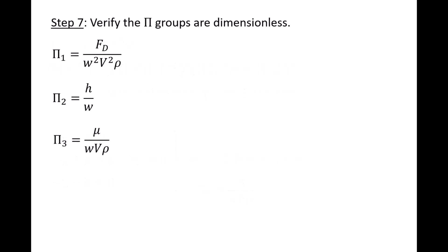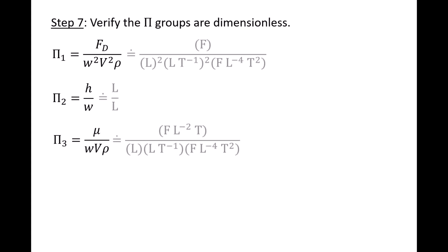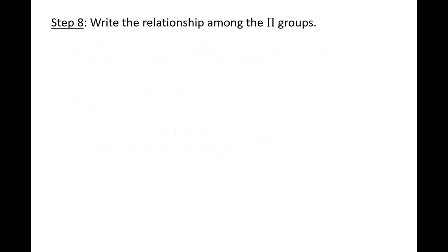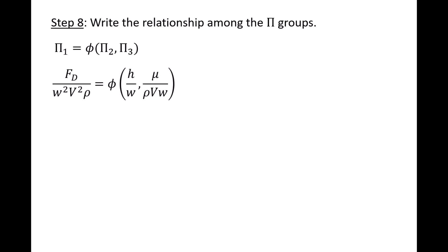Now that we've created our pi groups, we need to check that they are indeed dimensionless. We plug in the FLT dimensions for all variables in the pi groups and verify that the dimensions all cancel out. Finally, we write out the relationship between the pi groups: pi 1 is some function phi of pi 2 and pi 3. Plugging in the expressions, Fd over w squared v squared rho equals some function phi of h over w and mu over rho v w.